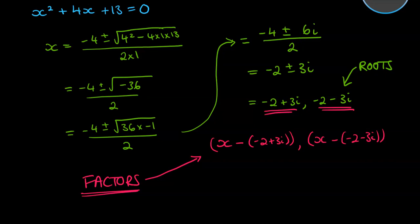Now I'll just simplify that a little bit. So of course, if we do x minus those things, we get x plus 2 minus 3i is a factor, and x plus 2 plus 3i is the other factor.